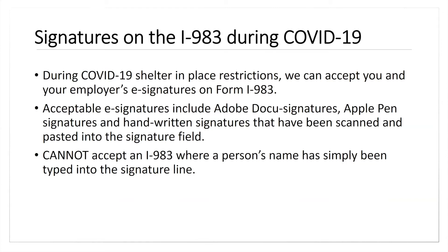If you're applying during a period where it may be difficult to get signatures, you are able to do e-signatures on Form I-983, unlike Form I-765. Acceptable e-signatures include Adobe DocuSign signatures, Apple Pen signatures, and handwritten signatures that can be scanned and pasted into the signature field. We cannot accept any forms where your name has been simply typed into the signature line, so make sure your signature is legible and meets these requirements.